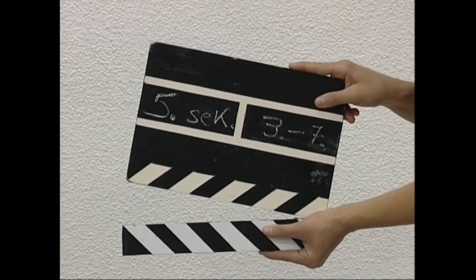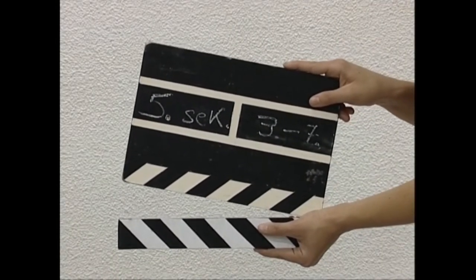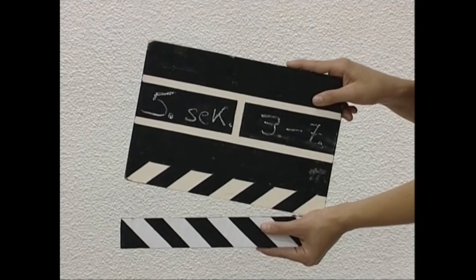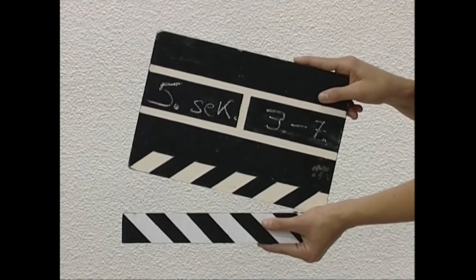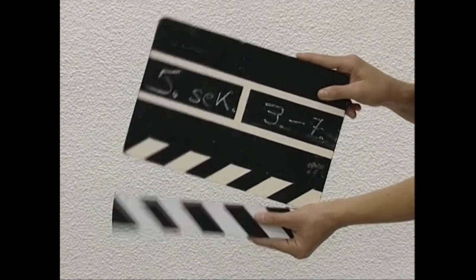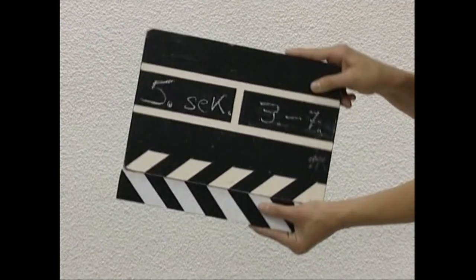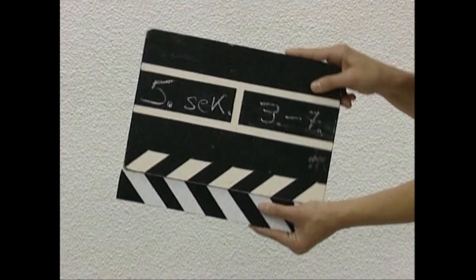Grabazioetan entzun dezakegu: 'Bosgarren sekuentzia, hirugarren planoa, zazpigarrena.' Hirugarren plano horrek esan nahi du muntaian hirugarren joango den planoa dela. Zazpigarren toma horrek, ordea, esan nahi du zazpigarren aldia dela gauza bera grabatzen ari direla.